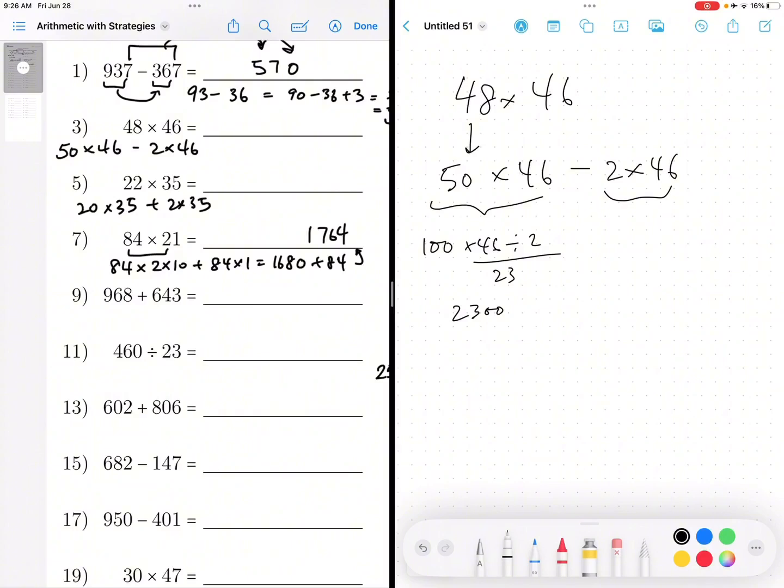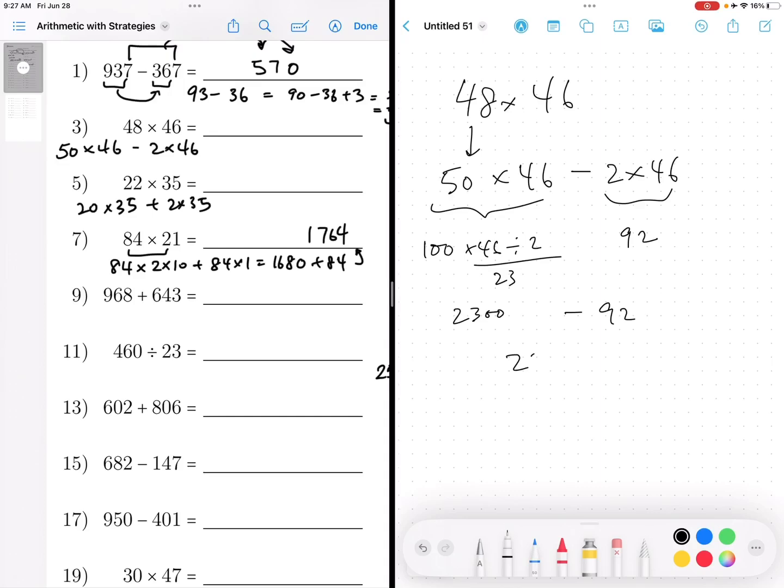And then now 2 times 46 is just 92. And so if I subtract 92, I have 2,208.